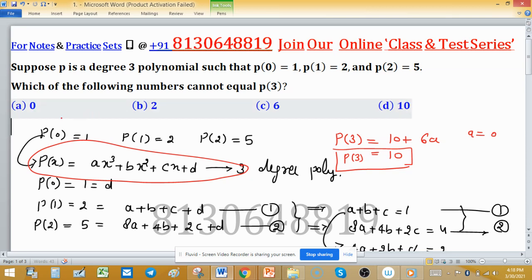So you can find correct answer. Option D is correct for this one - P(3) cannot equal 10. But you can generate polynomials which have P(3) as 0, P(3) as 2 and P(3) as 6. Some calculation you have to do and you can find polynomials for this. But P(3) cannot be possible 10.